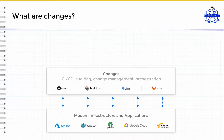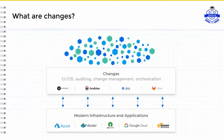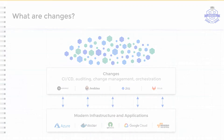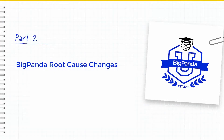These changes are tracked by many siloed tools, and with often thousands of changes happening every day, it has become extremely difficult to identify the offending change in a change-related outage. This is where the BigPanda Root Cause Changes feature, or RCC, comes in. RCC presents you with all the changes related to the incidents you are working on, and notifies you which of these changes are suspected to be the root cause.